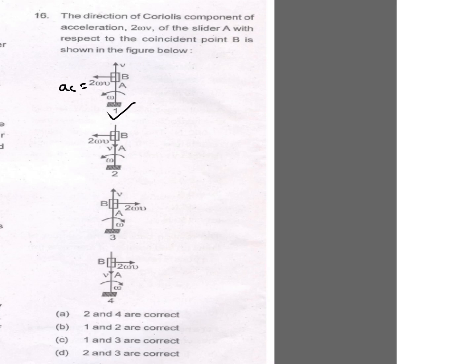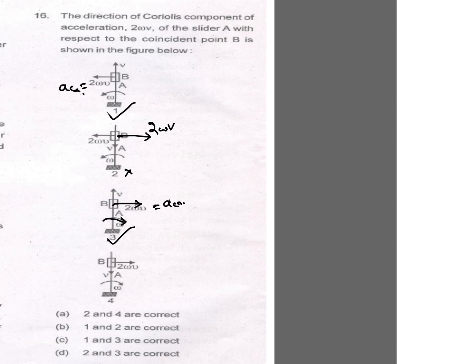In option 2, v is downward and omega is anticlockwise, so the Coriolis component should be rightward — option 2 is not correct. In option 3, v is upwards and omega is clockwise, so the direction is correct — option 3 is correct. In option 4, v is downwards and omega is clockwise, so the direction is wrong — option 4 is not correct. From the options, 1 and 3 are correct, so C is the answer.